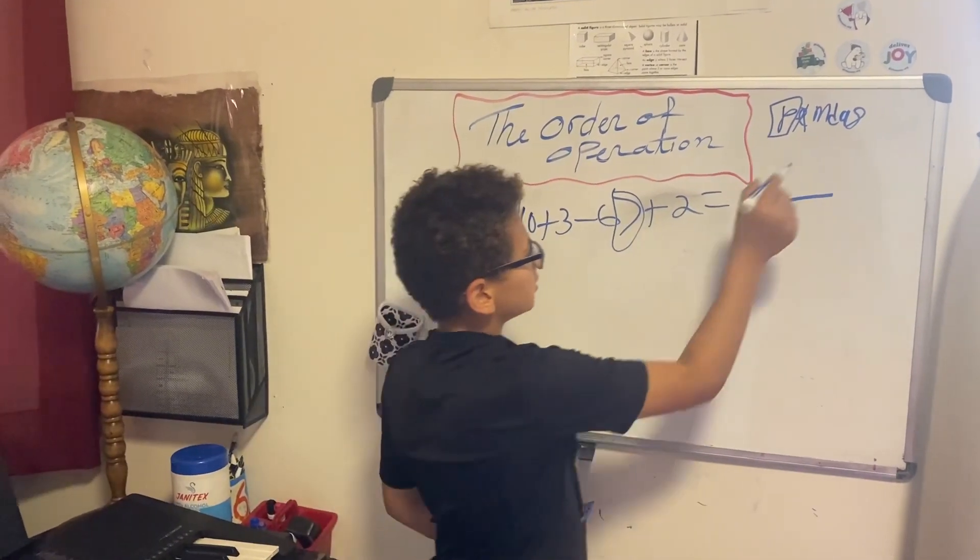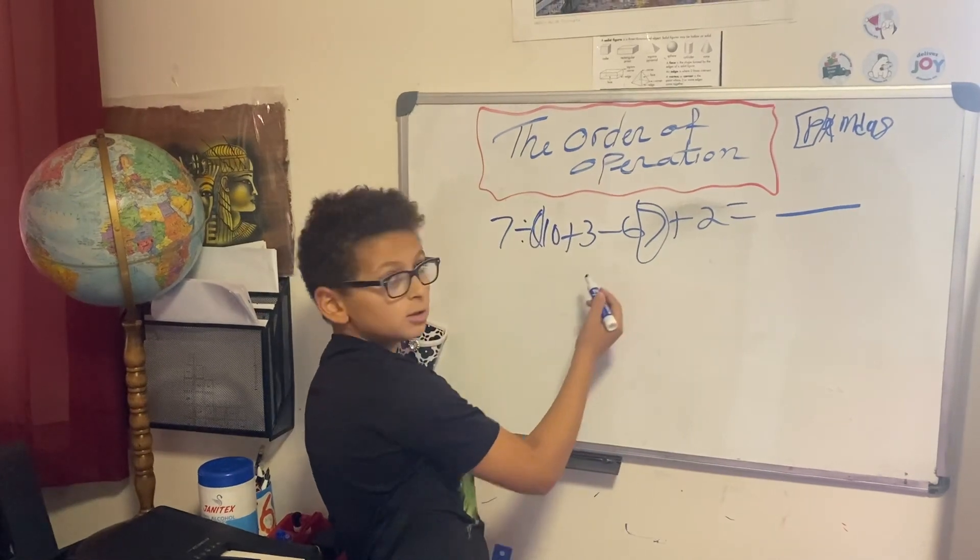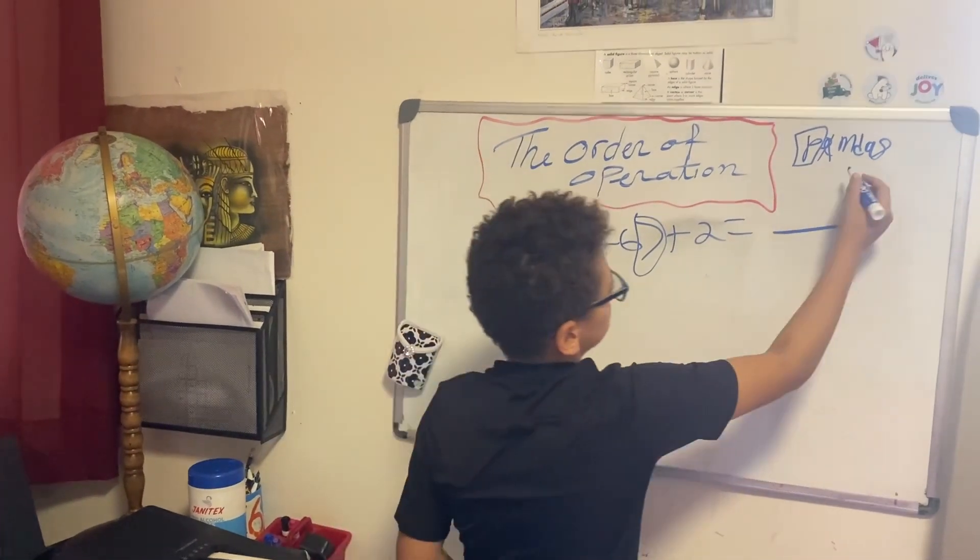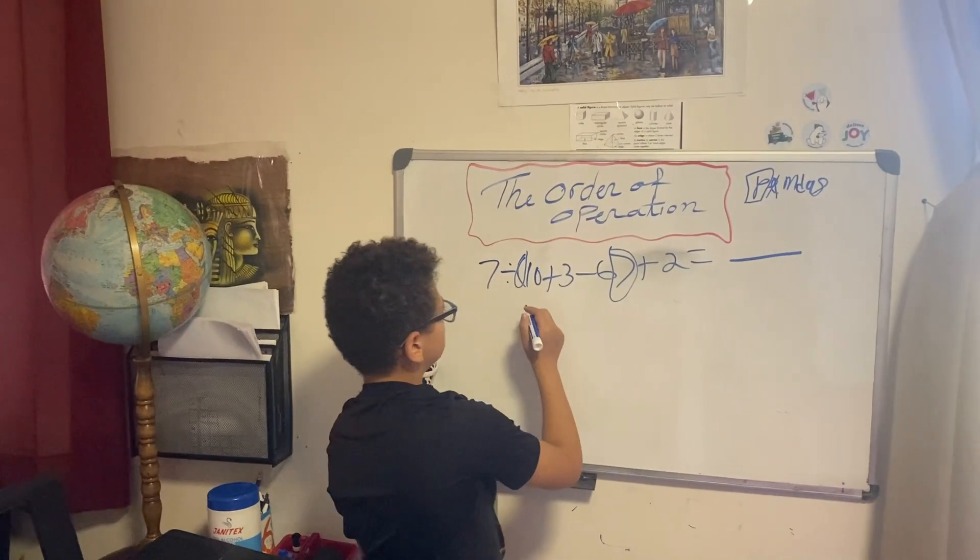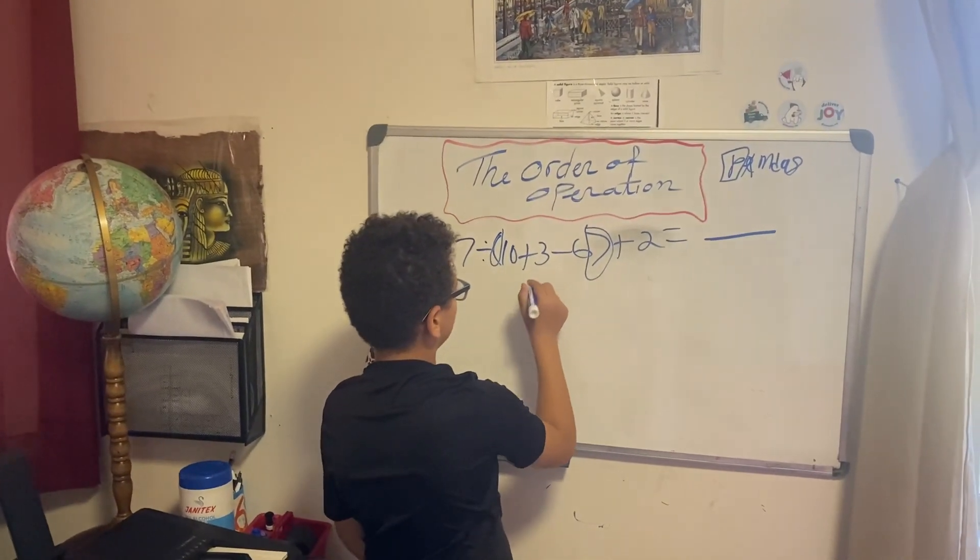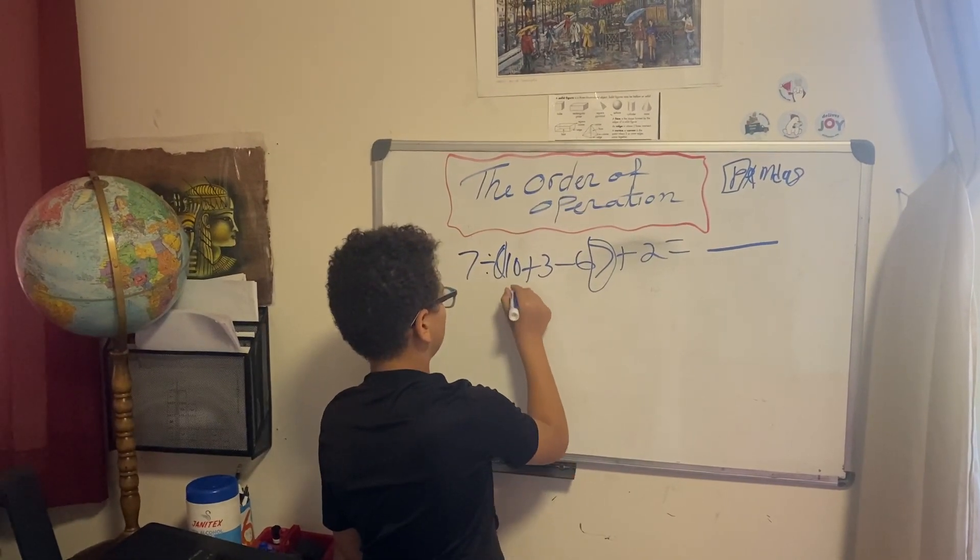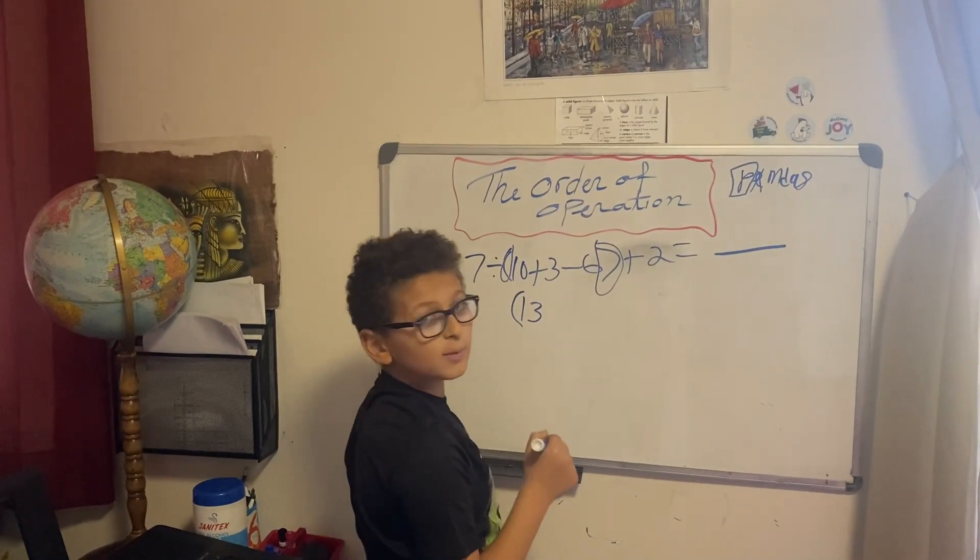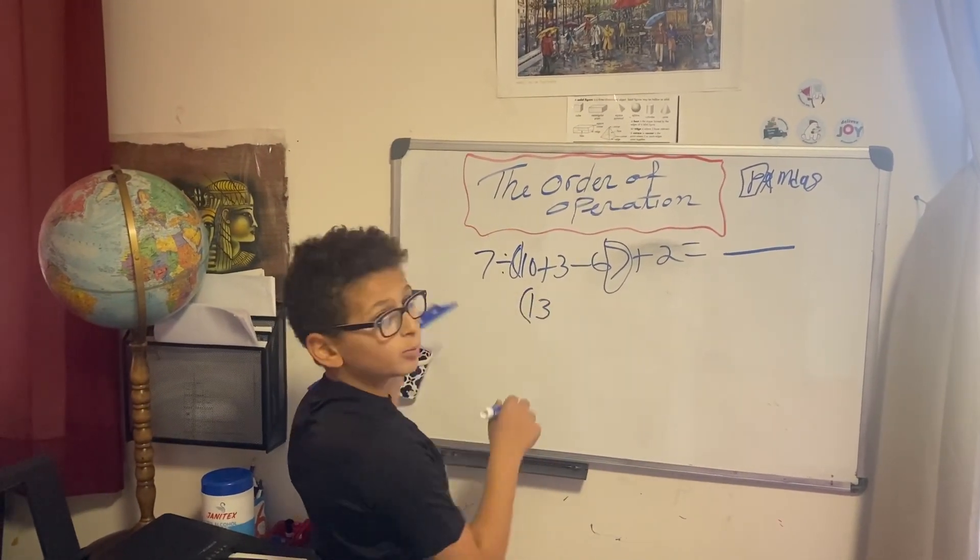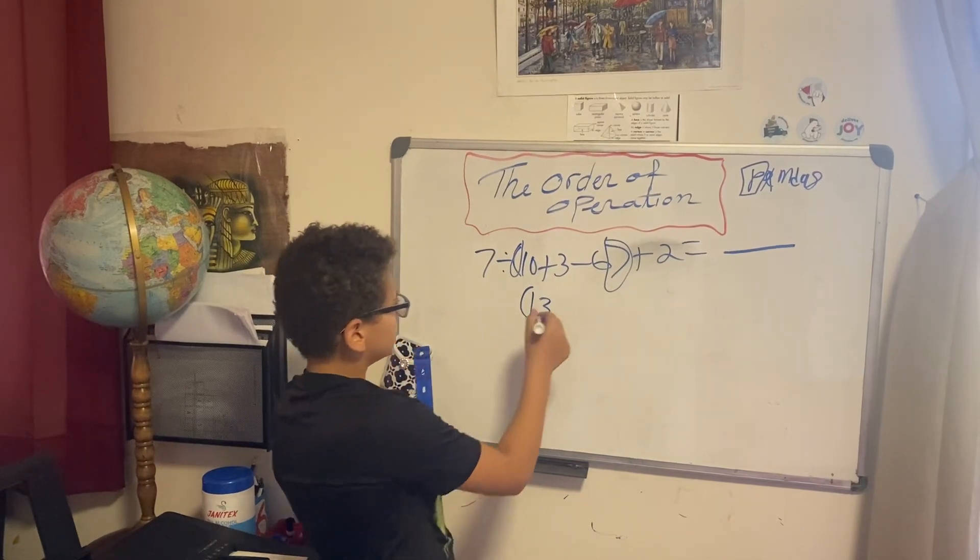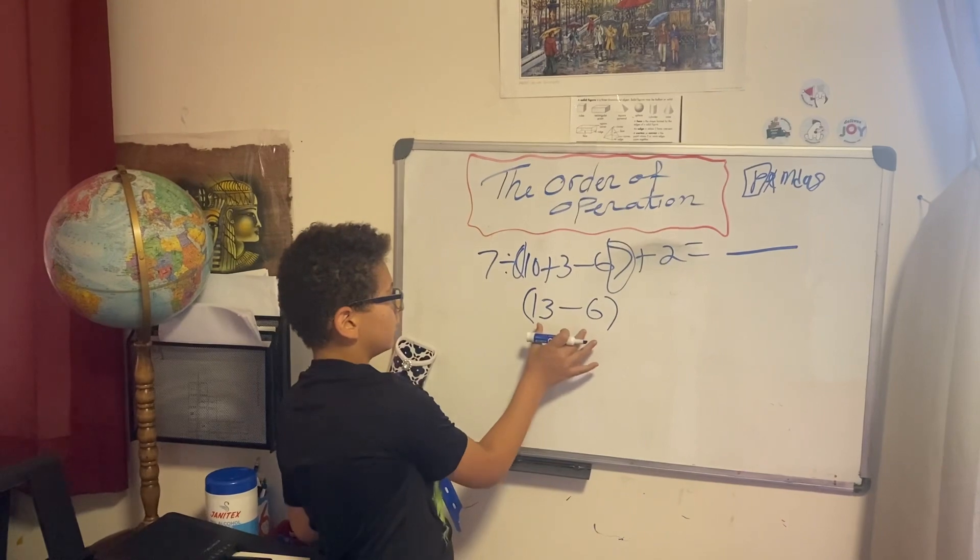After parentheses comes multiplication. Is there any multiplication? No. Division? No. Addition? Yes, there is addition. So 10 plus 3 would equal 13. Also keep in mind you have to keep the parentheses around the problem until you get the answer.